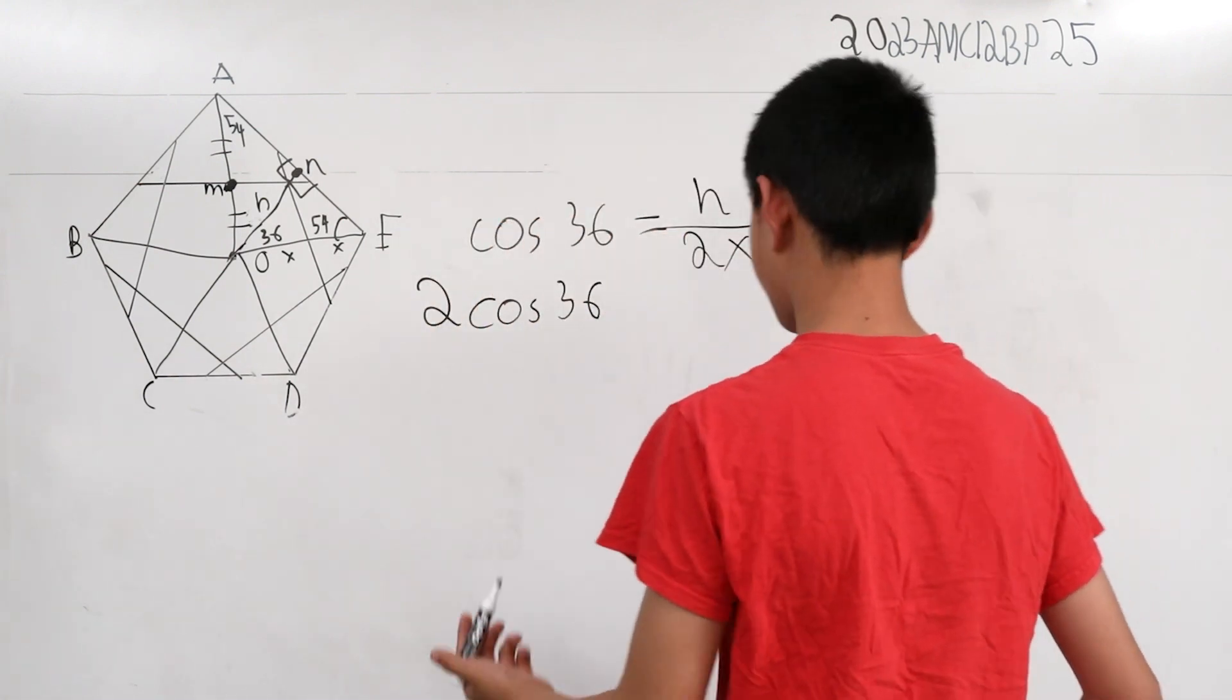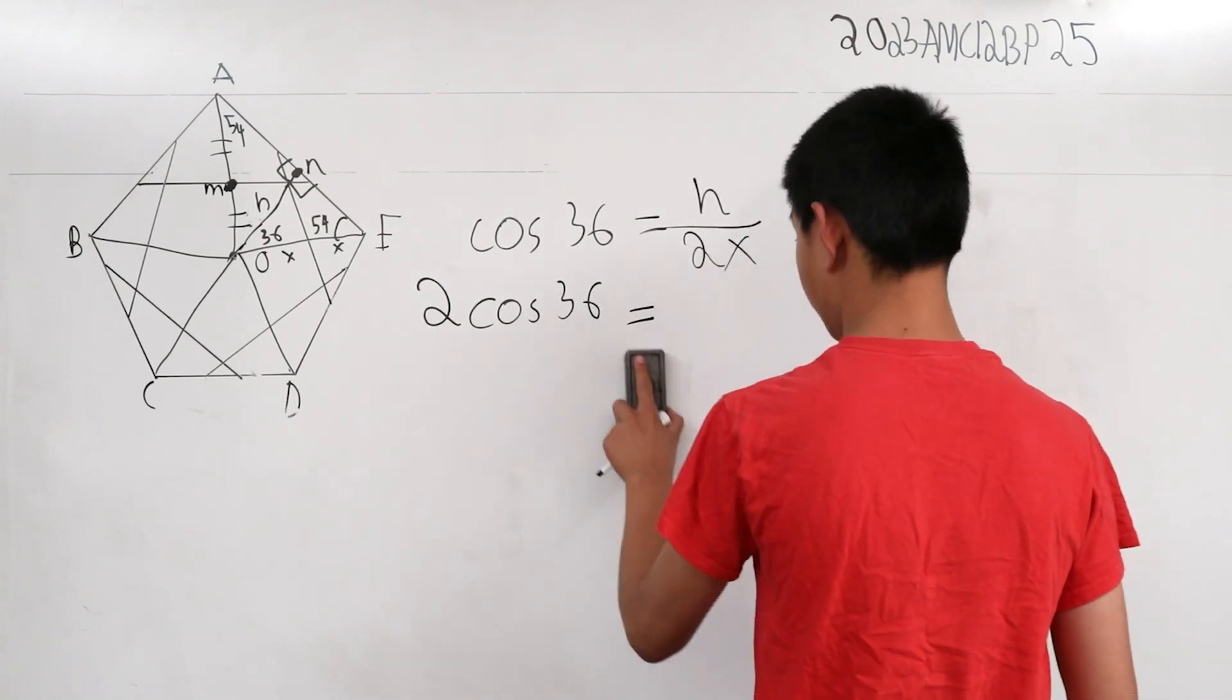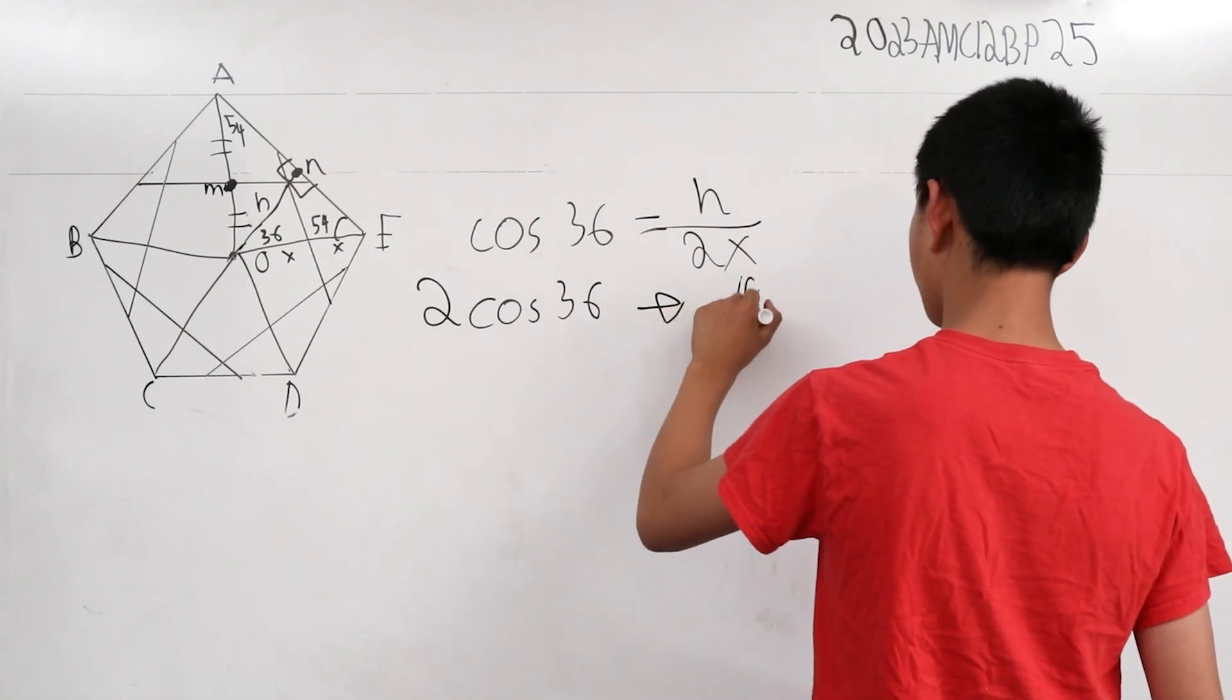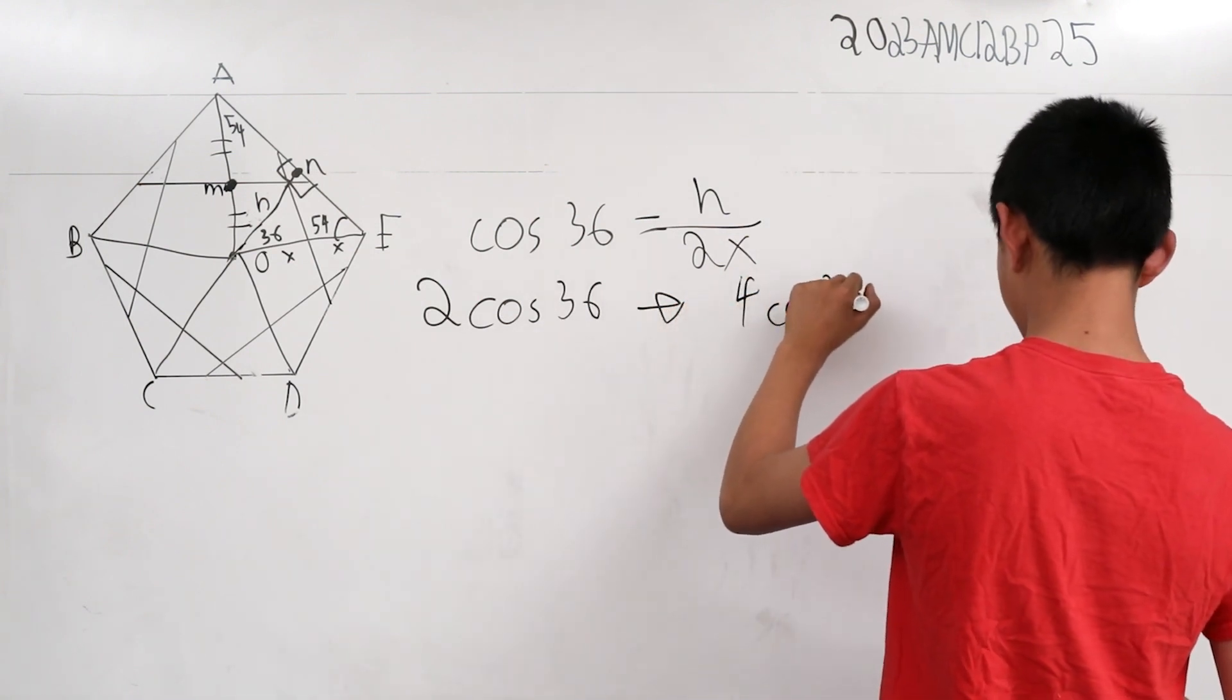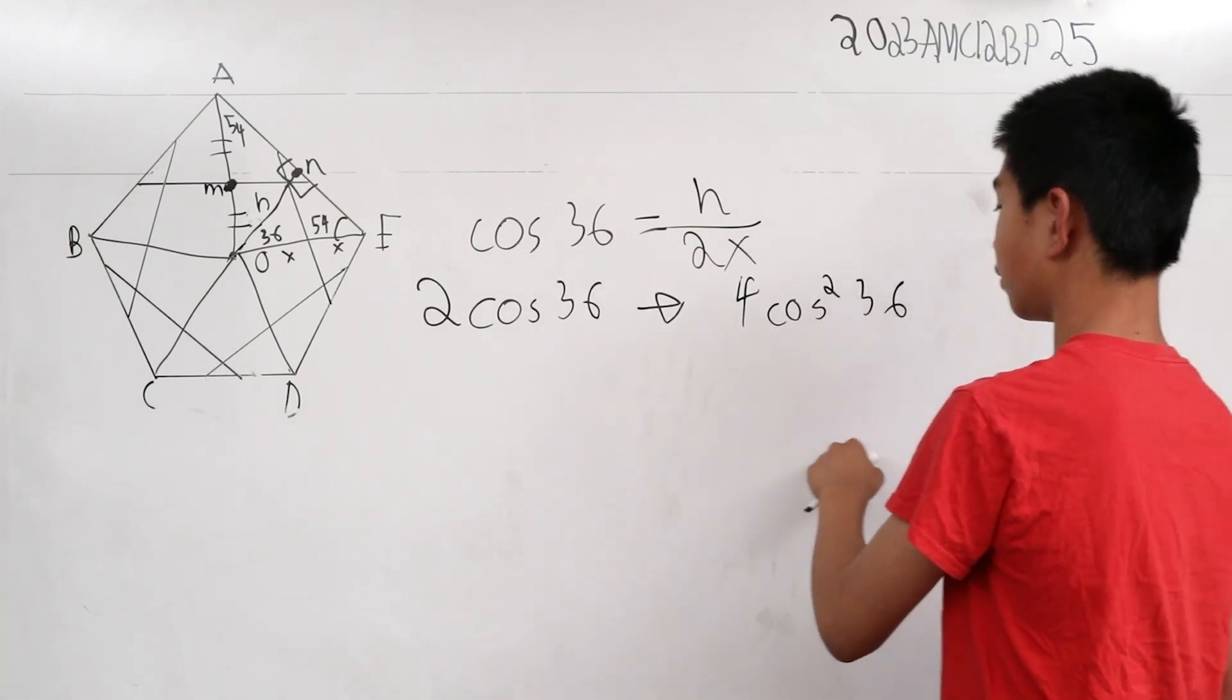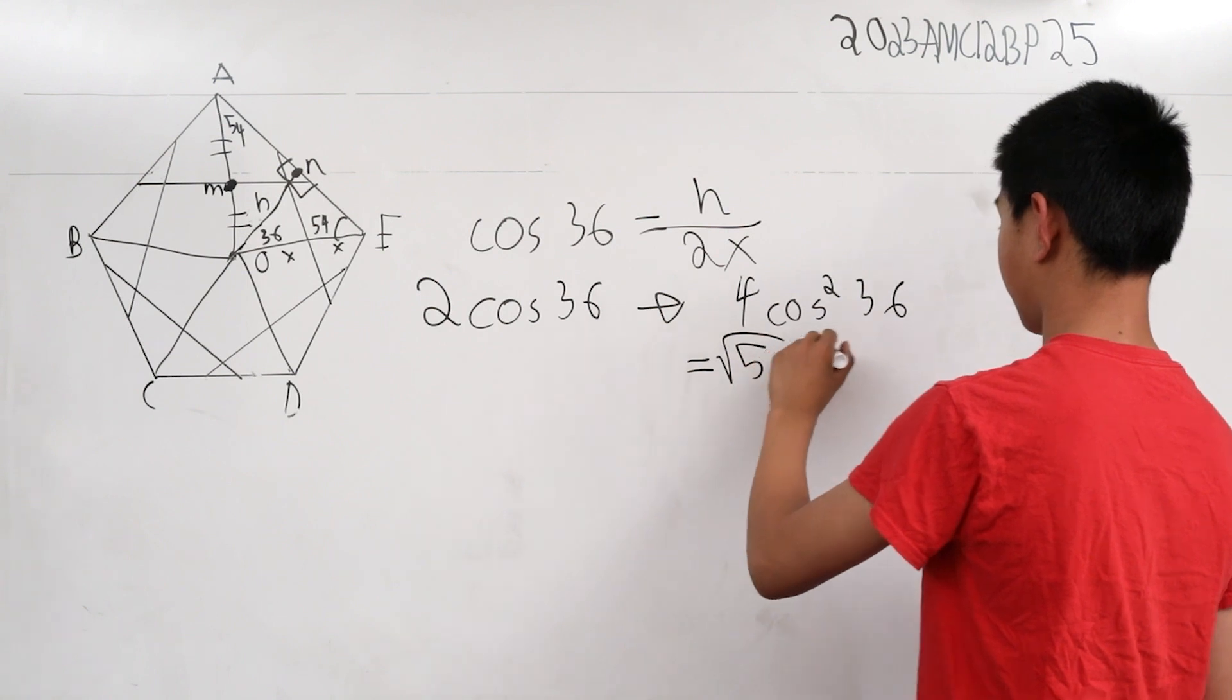The ratios of the areas now becomes 4 times cosine squared of 36. From finding this value, we get our answer, which is the square root of 5 minus 1.